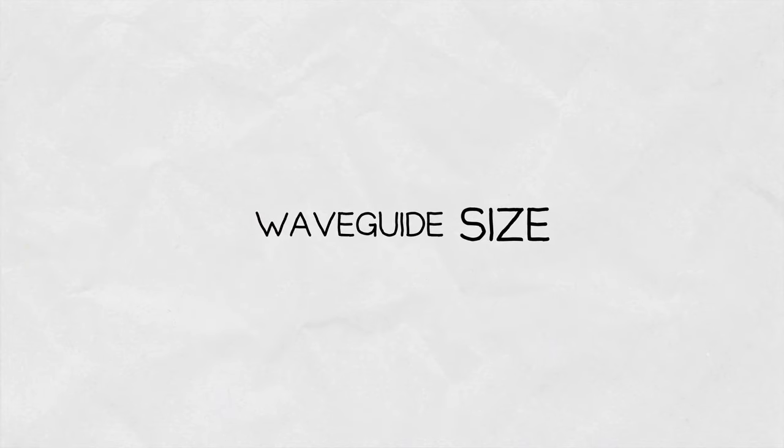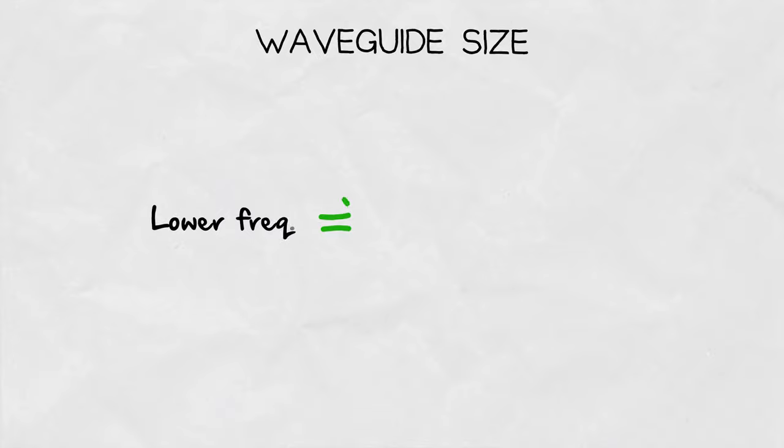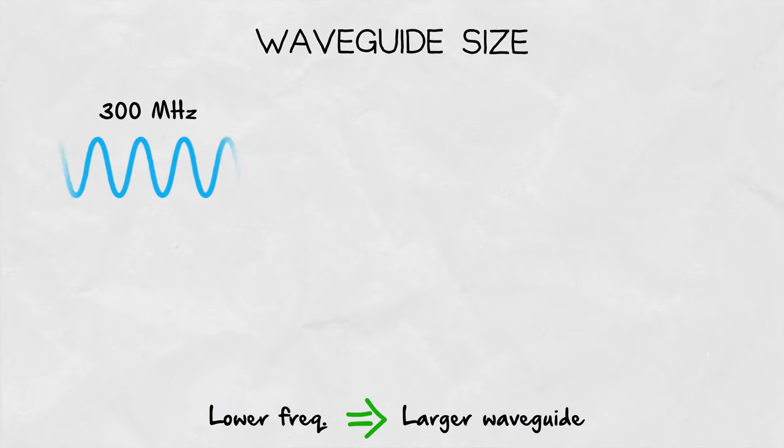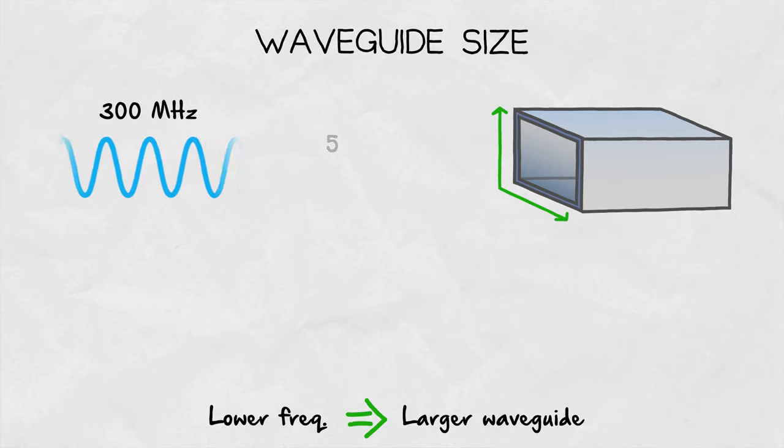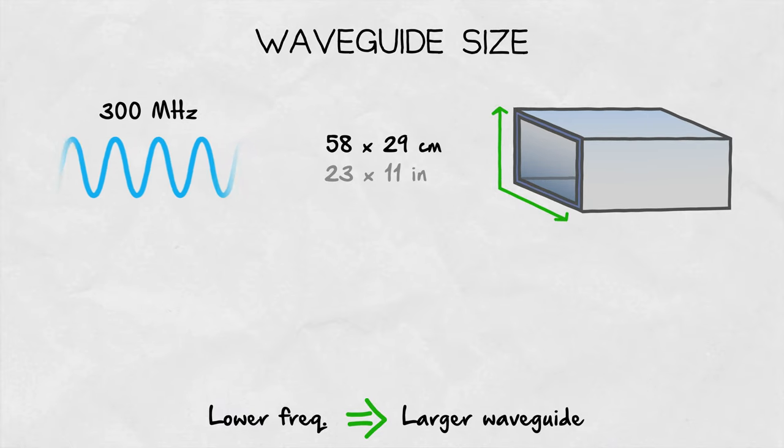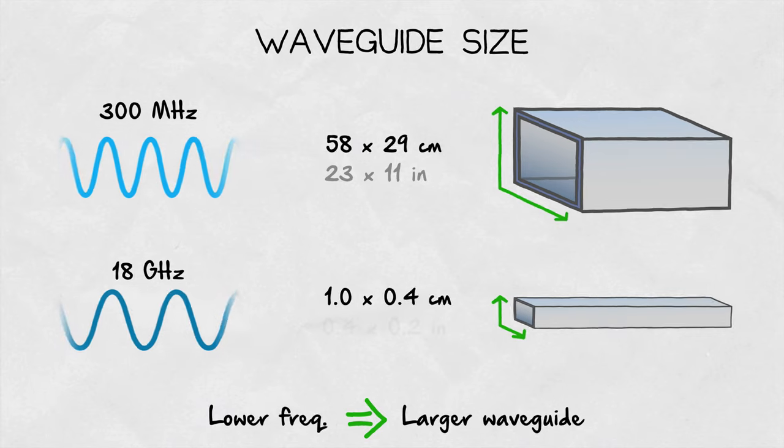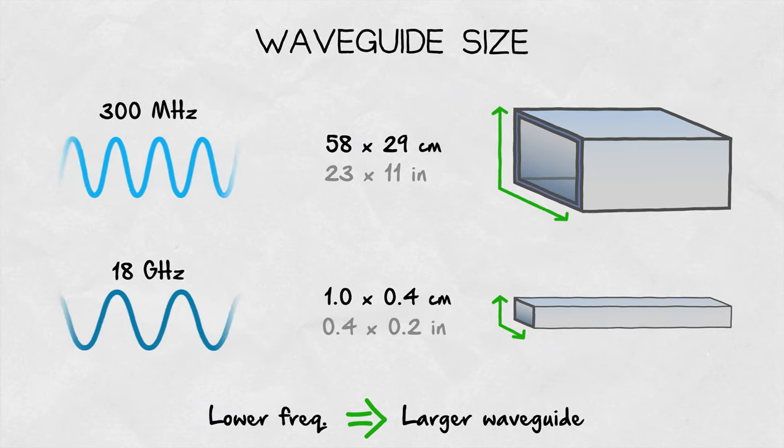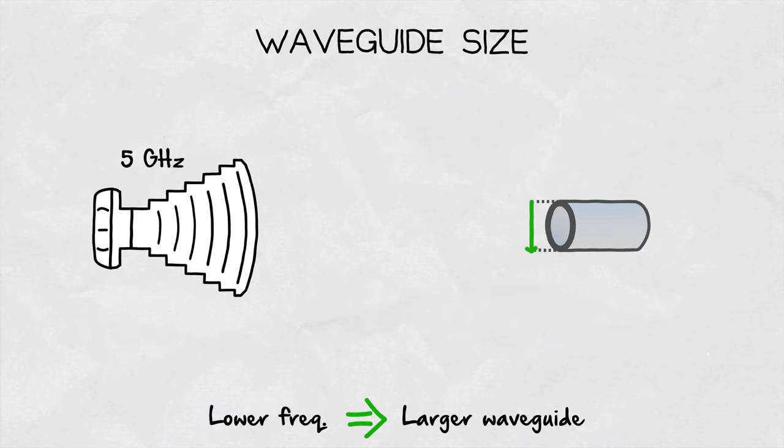The frequency we want to use determines the size of the waveguide. The lower the frequency, the larger the waveguide is. For example, at 300 megahertz, the size of a rectangular waveguide is 58 by 29 centimeters, while at 18 gigahertz, its size is 1 by 0.4 centimeters. Waveguide diameter of a symmetrical horn is 36 millimeters.